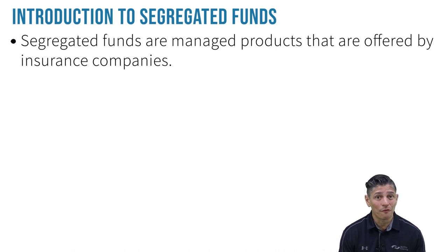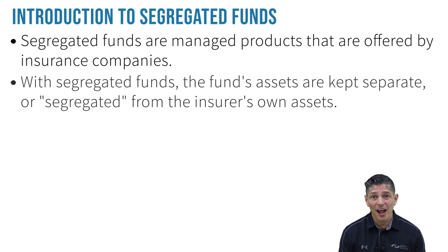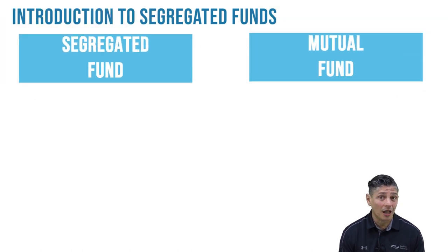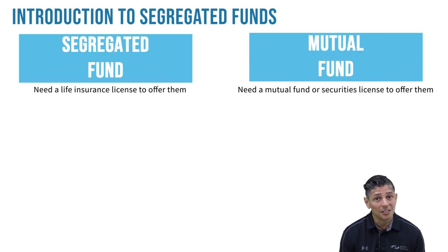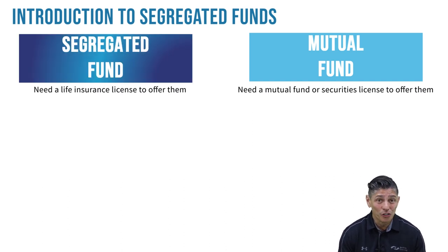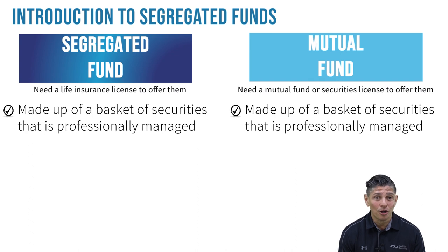Segregated funds are a type of managed product offered by insurance companies. The name refers to the fact that the fund's assets are kept separate, or segregated, from the insurer's own assets. Segregated funds are often discussed alongside mutual funds when speaking to clients, assuming the advisor is licensed to sell both mutual funds and insurance products. I often refer to segregated funds as fancy versions of mutual funds because they have a lot of similarities — much like mutual funds, a segregated fund is made up of a basket of securities that is professionally managed.